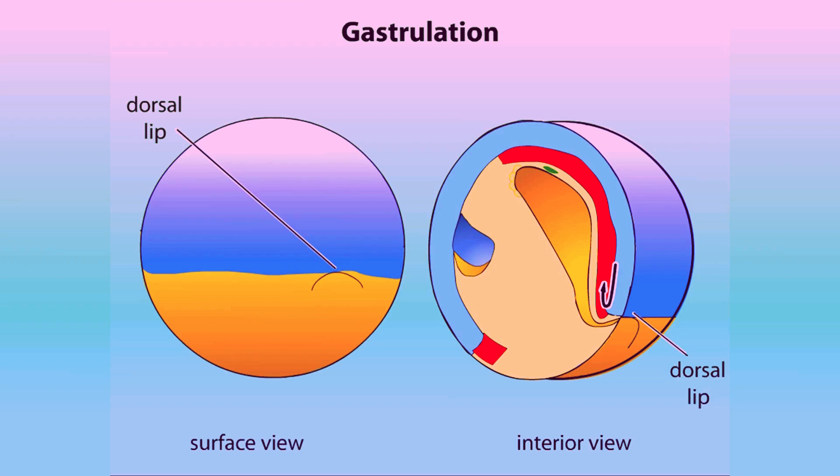The movement of cells into the embryo creates a lip called the dorsal lip, over which sheets of cells continue to move inside. At the same time, the ectoderm extends around the embryo surface in a process called epiboly.